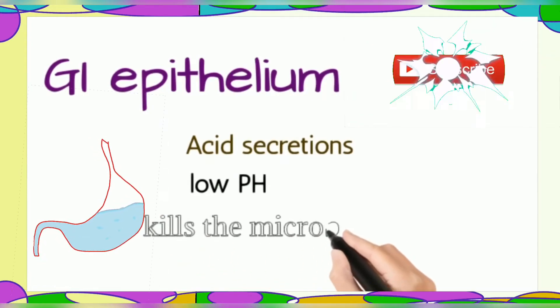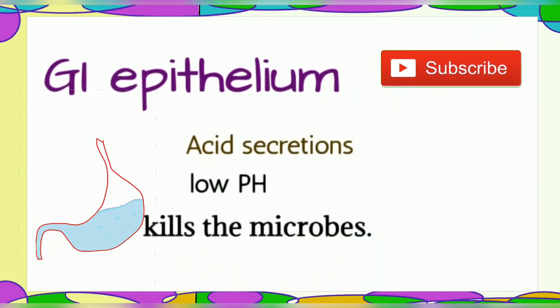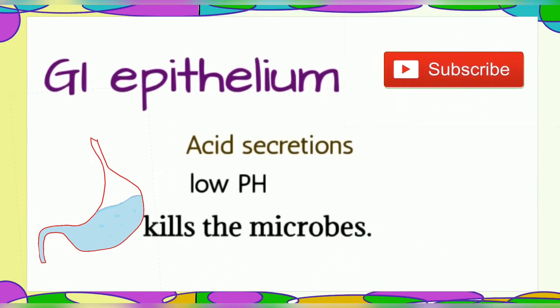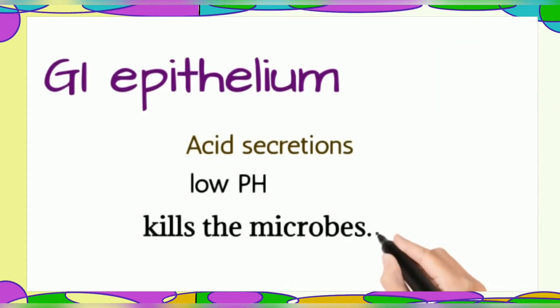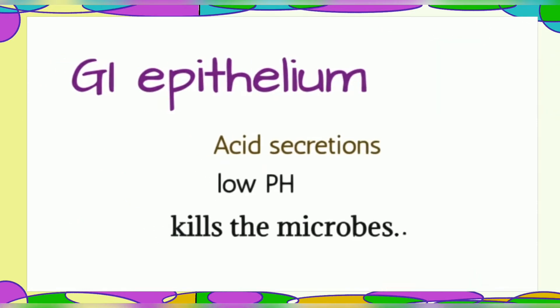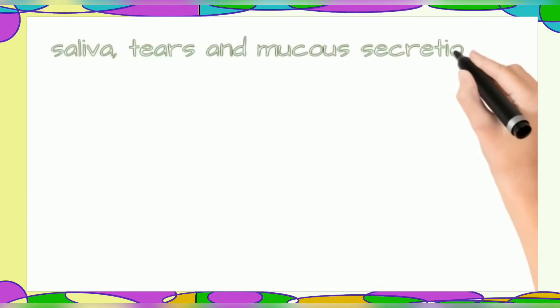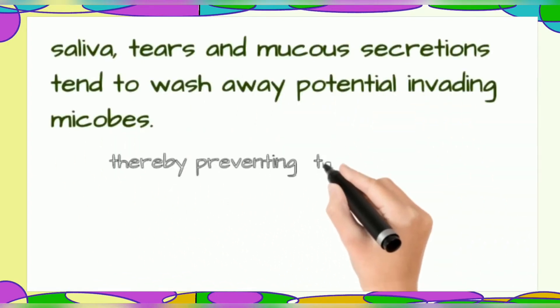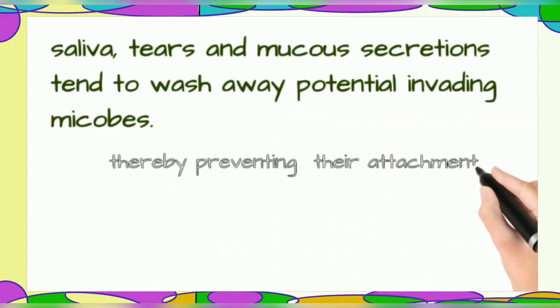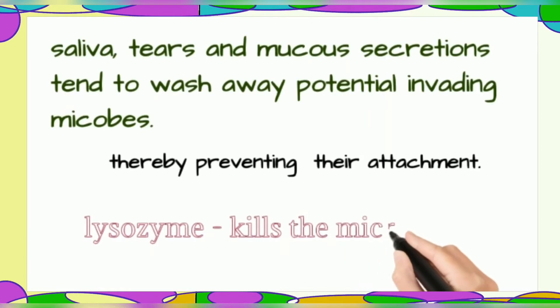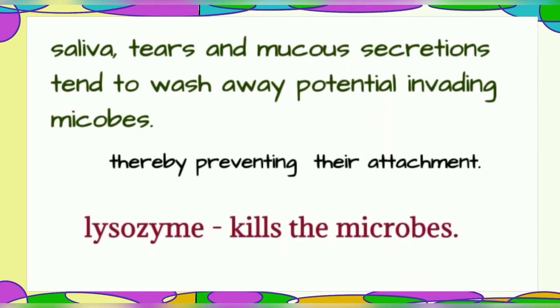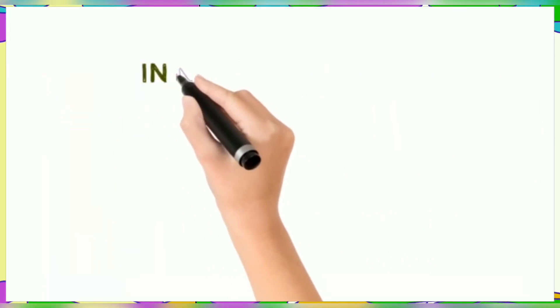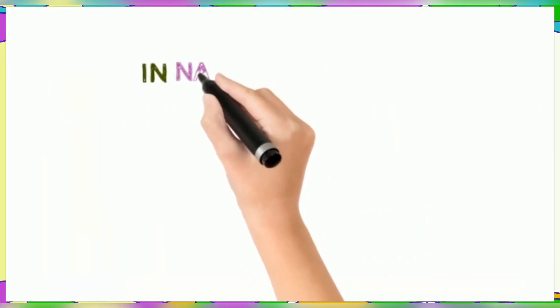Other physiological barriers include saliva, tears, and various enzymes. These chemical substances contain lysozyme and other enzymes that act against microorganisms. This completes the overview of innate immunity barriers.